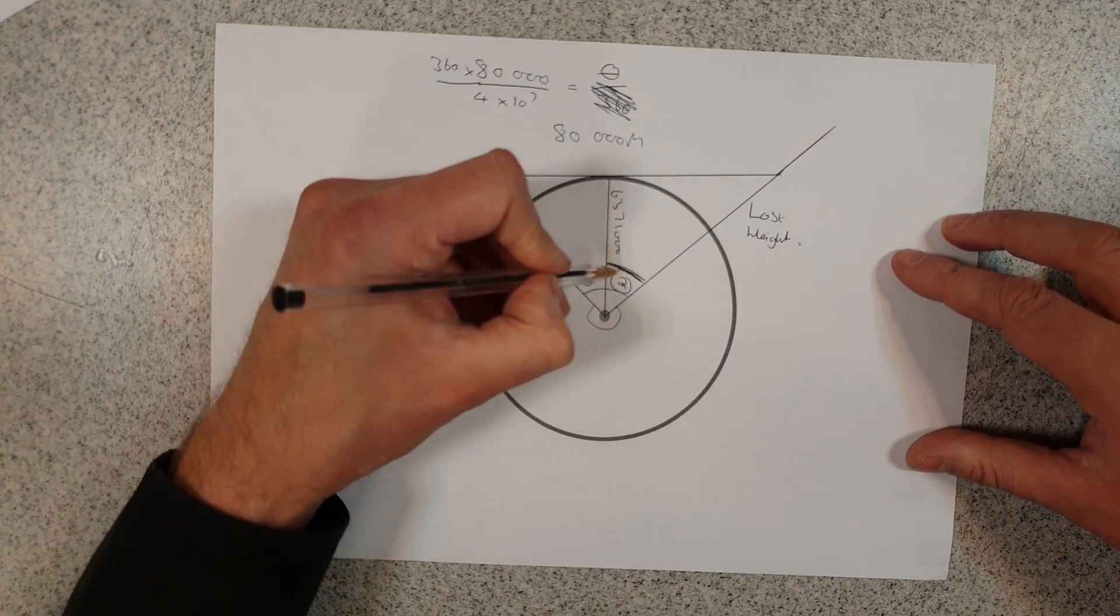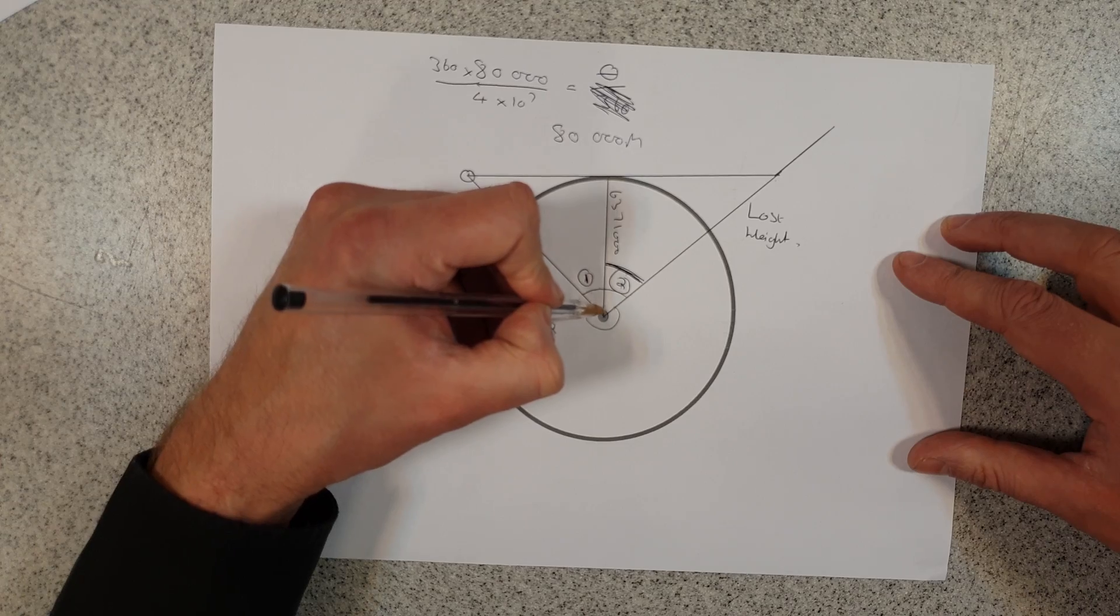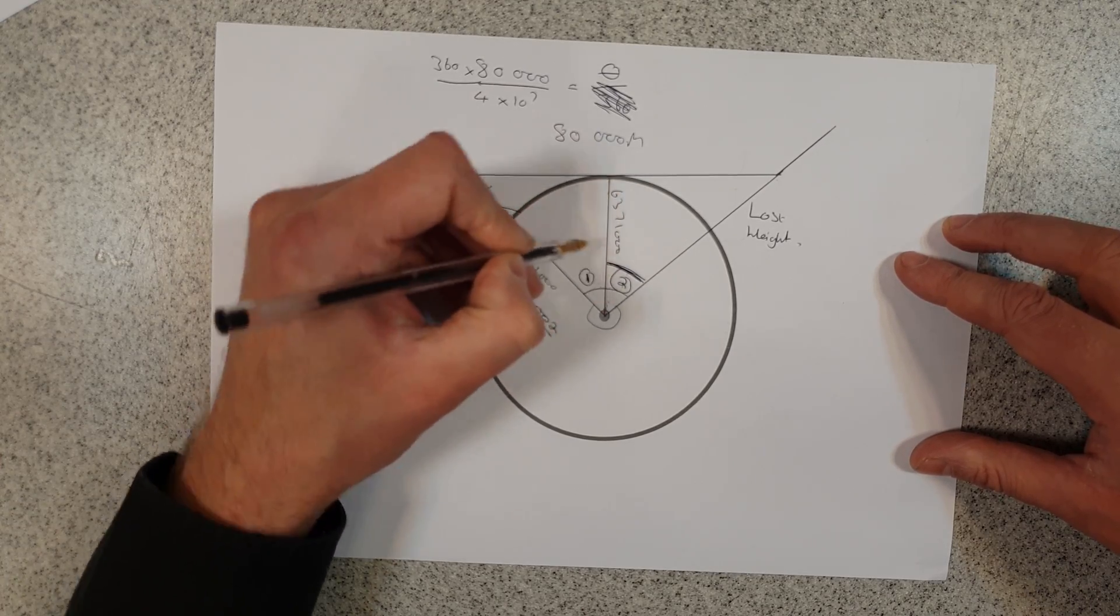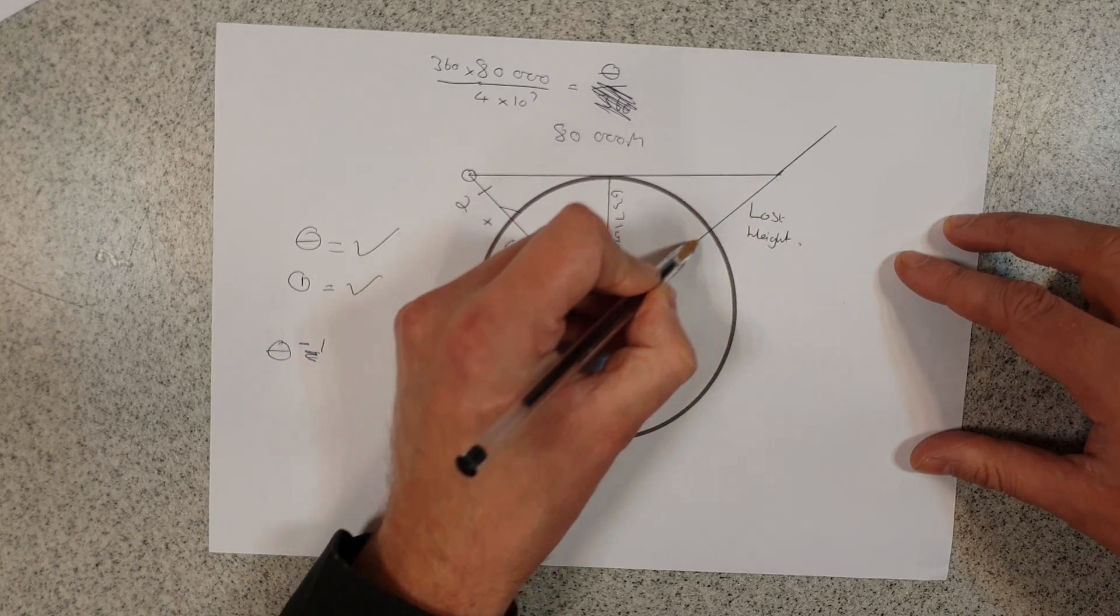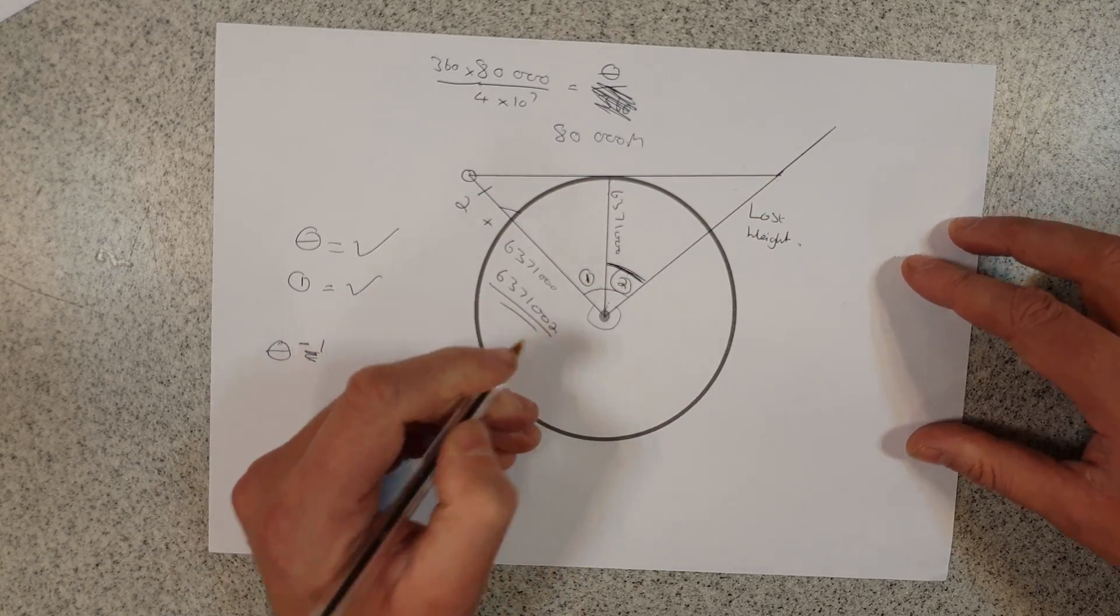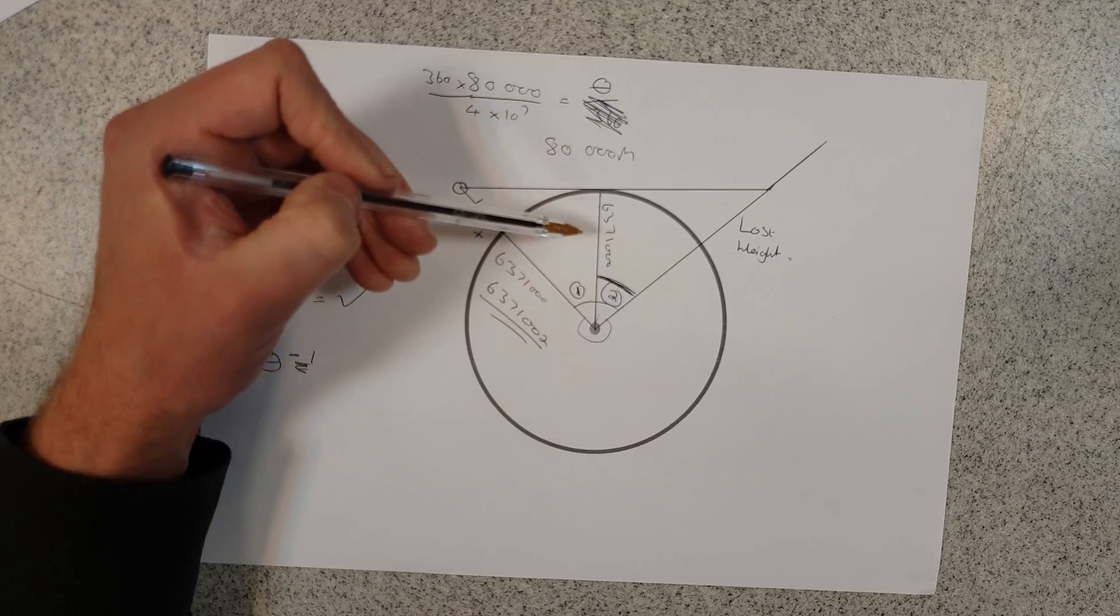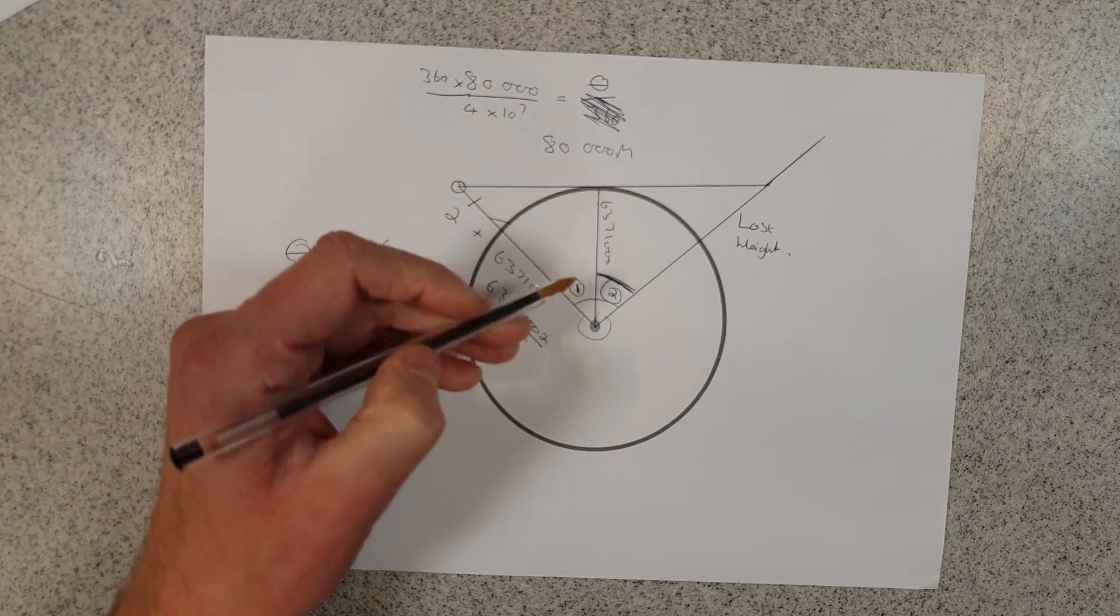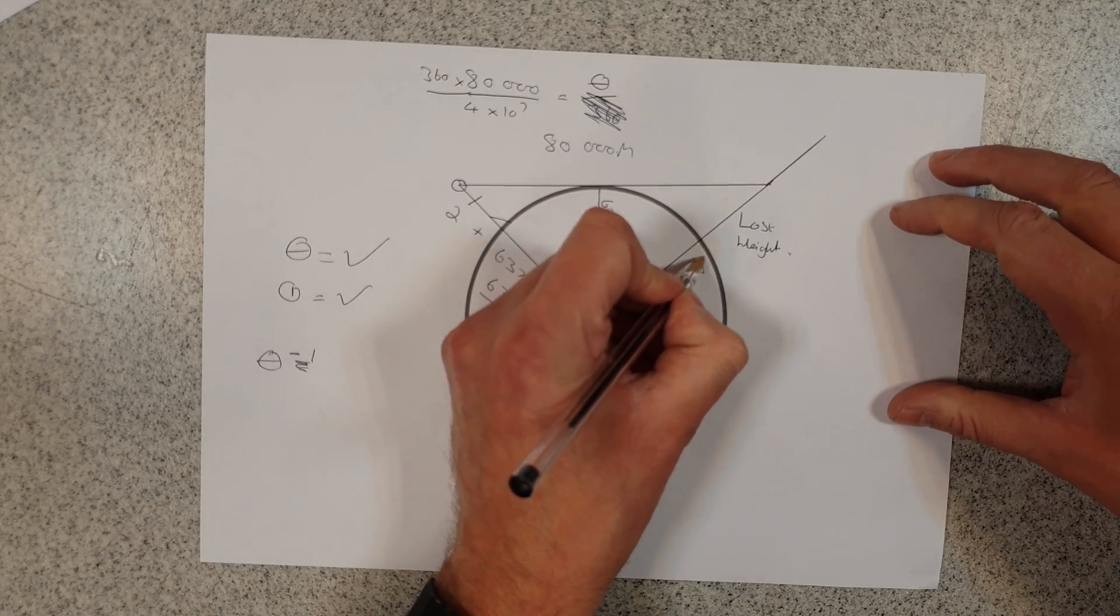Why is that important? Well, if I know the angle and I know this here, which is the radius of the earth, then I can work out the hypotenuse of this side of the triangle. Again, I'm trying to work out the hypotenuse when I know the adjacent and the angle, so I can bring the cosine rule into play again and I can figure out this entire length here.